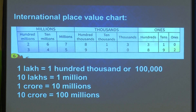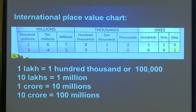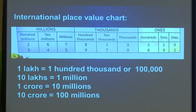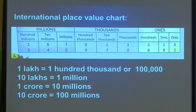In the international system after 3 digits the comma is placed. So one lakh is hundred thousand, which is under thousands. Ten lakhs is equal to one million. One crore is equal to ten millions. Ten crores is equal to hundred millions. So you can read numbers in the international system as well as in the Indian system.